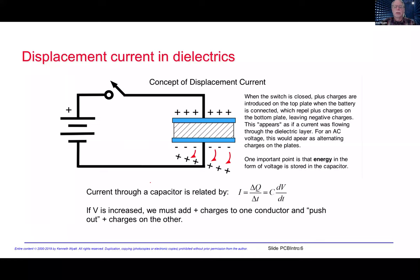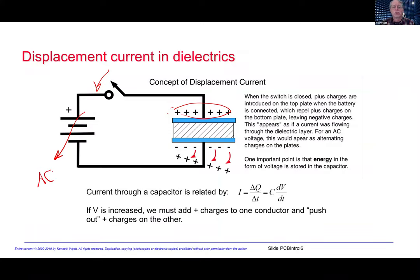We'll start with the concept of displacement current. Capacitors are really energy storage devices, and that energy is stored as a voltage across the plates. If we close the switch, we get plus charges on one side, which repel any plus charges on the other, leaving us with minus charges. If this goes to an AC or high-frequency source, it's going to look like we get current flow through that dielectric — it's really the transfer of energy from one side to the other.